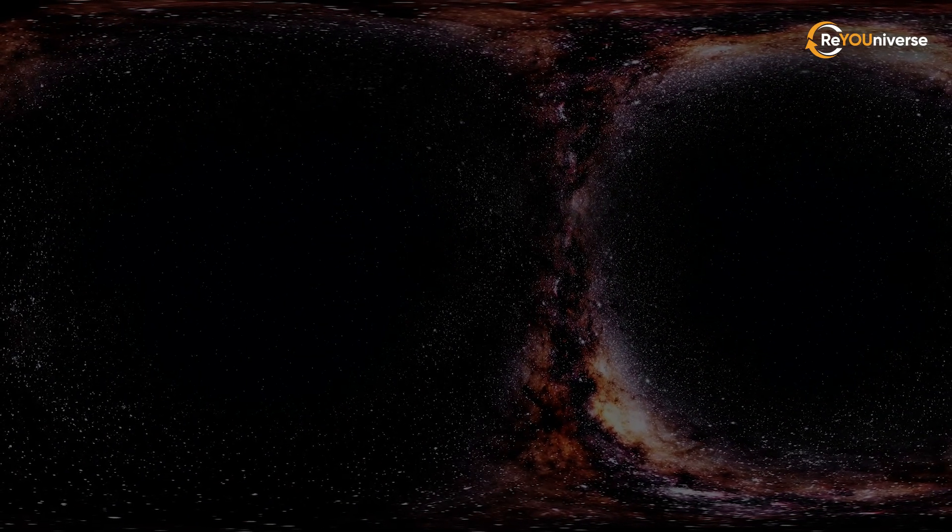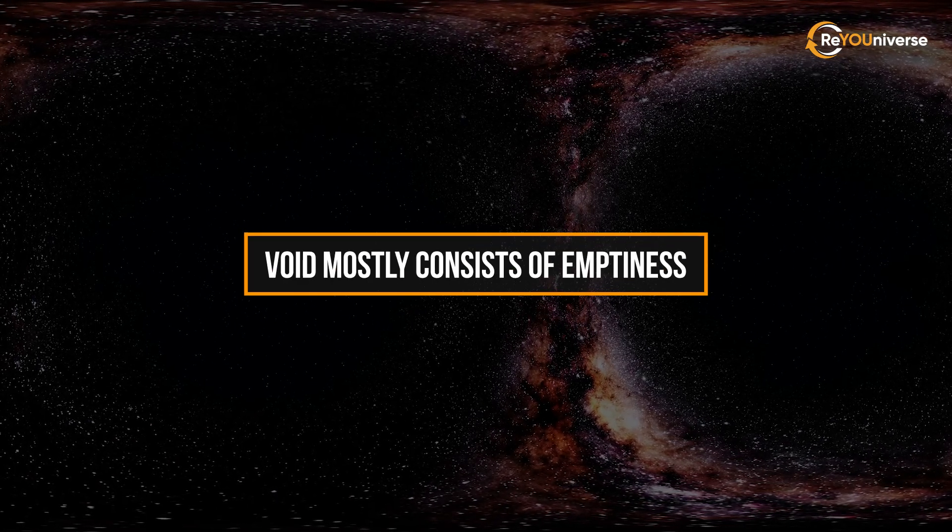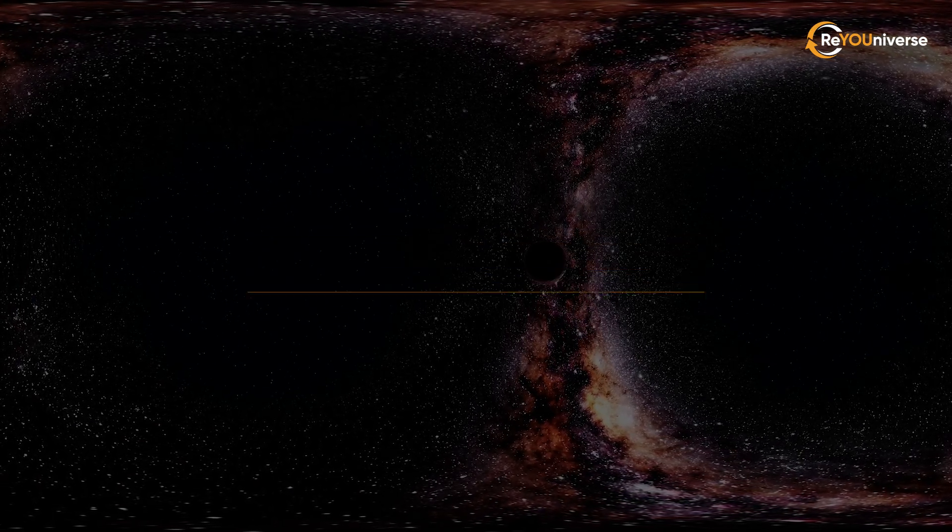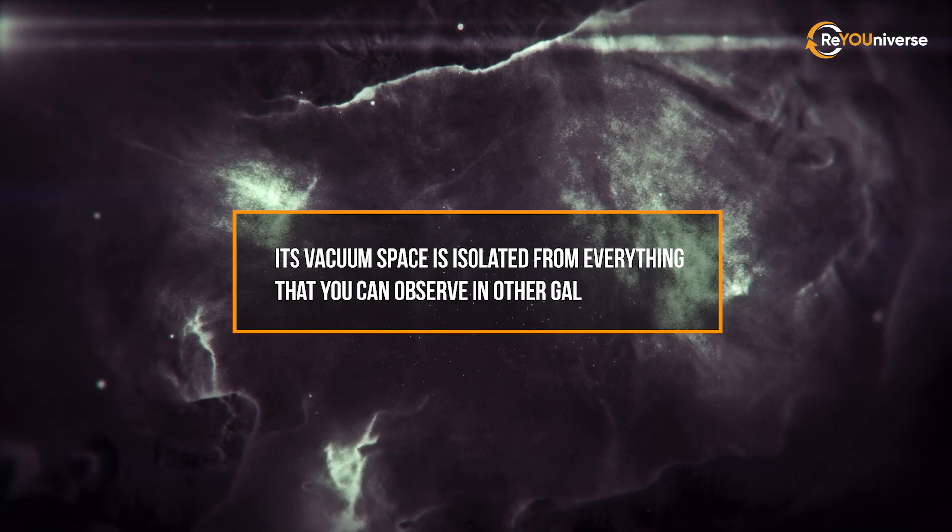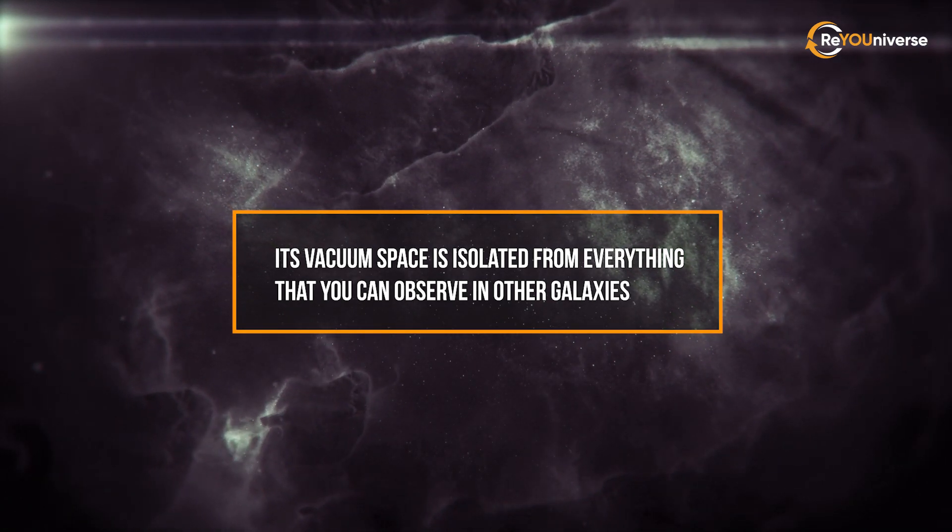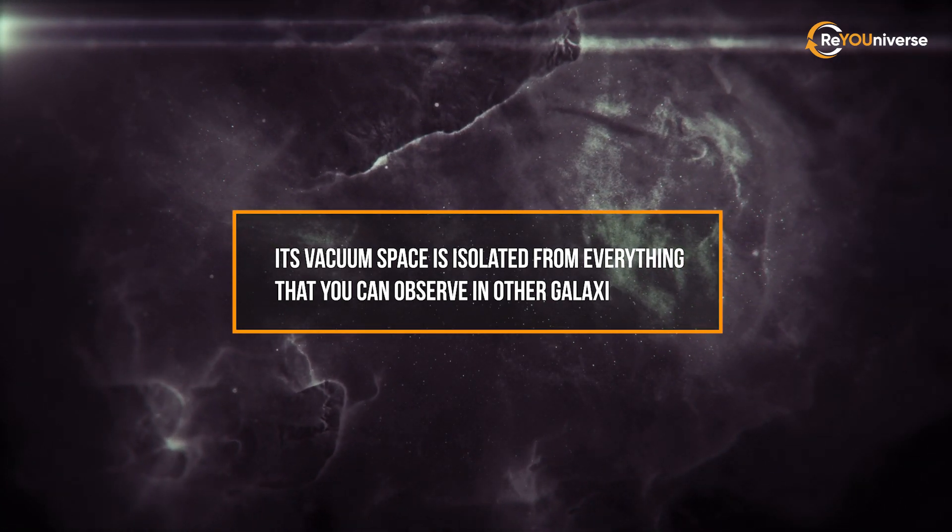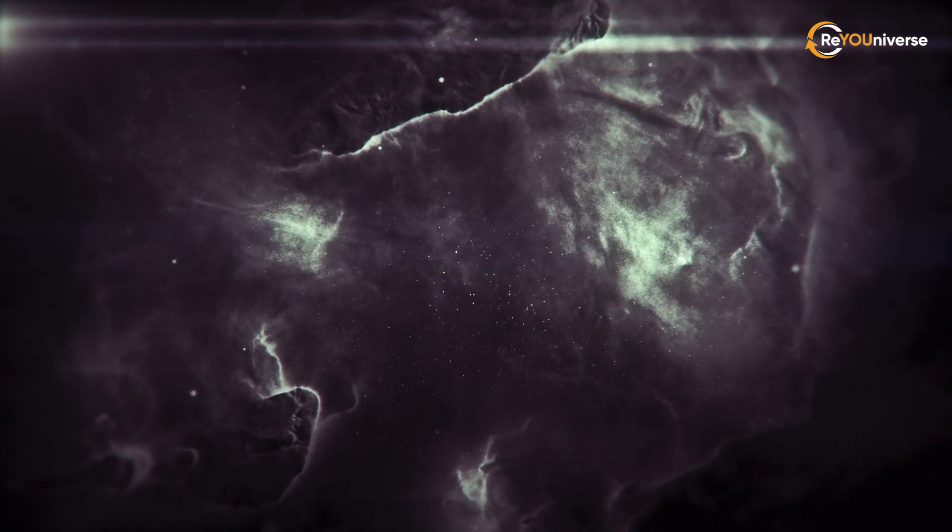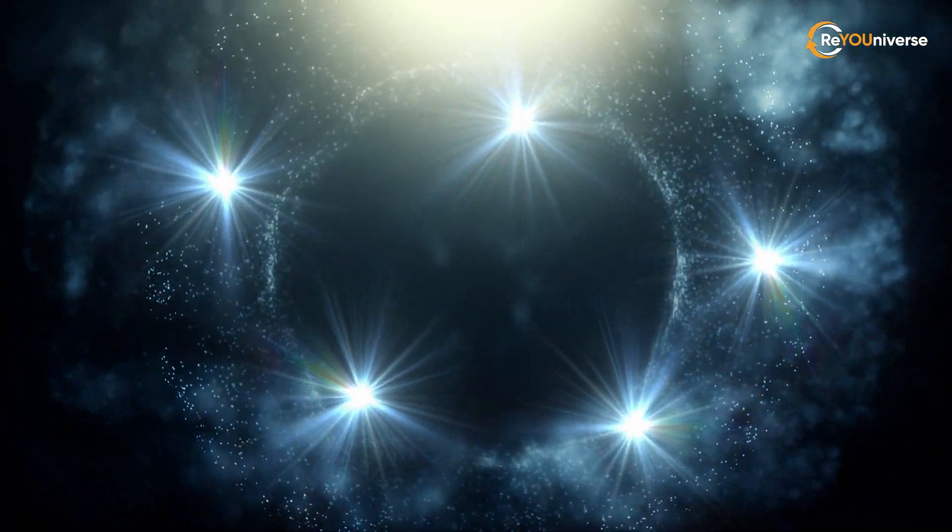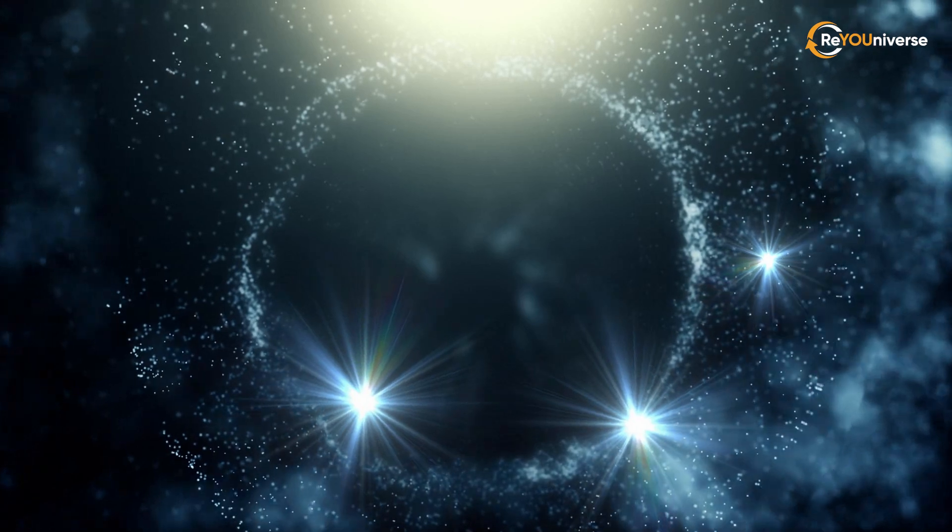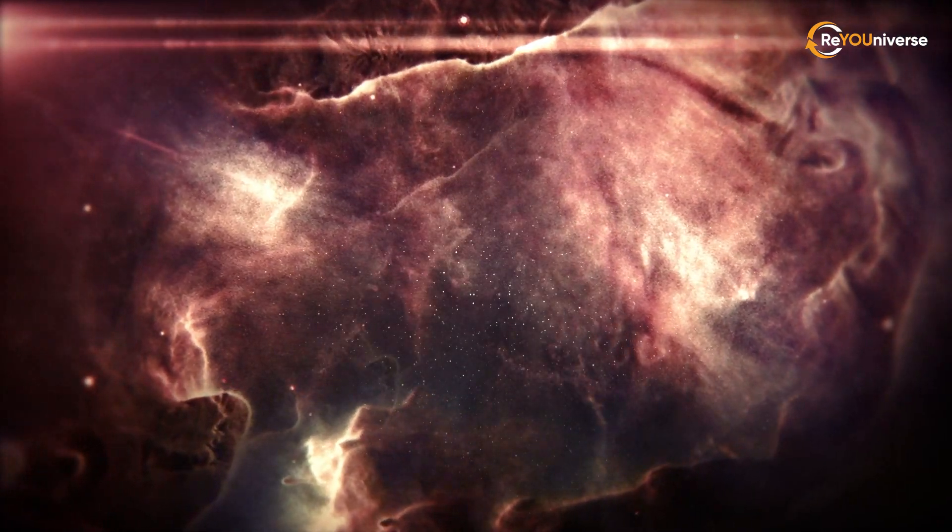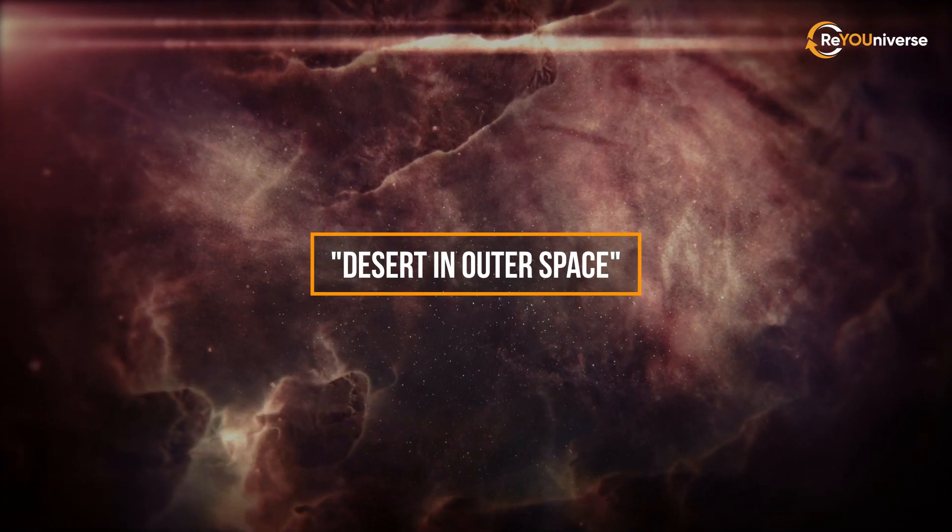It sounds paradoxical, but the void mostly consists of emptiness. Its vacuum space is isolated from everything that you can observe in other galaxies. You won't see any dust, dirt, or stones there. There's no place for even the smallest particles, such as photons. This is why scientists call the Boötes Void a desert in outer space.